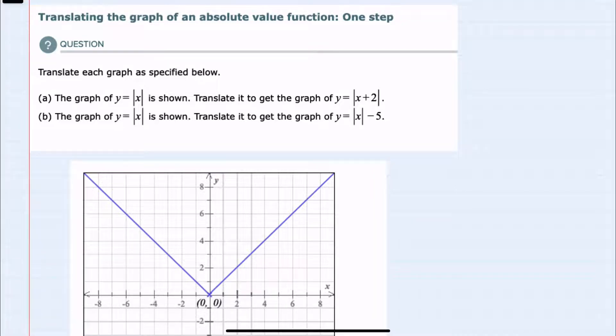In this video, I'll be helping you with the ALEKS problem type called translating the graph of an absolute value function one step. We're given two translations here, a and b. Each of these is a one step translation.